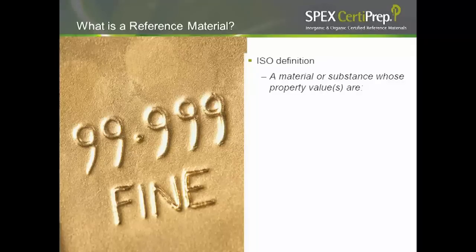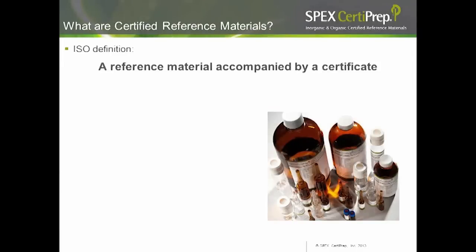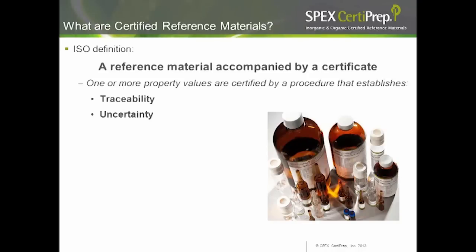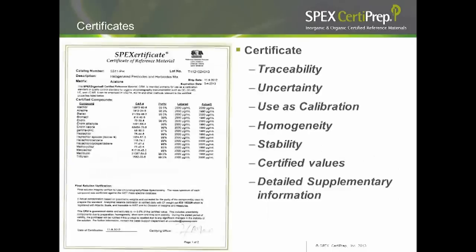A reference material is a material or substance whose property values are sufficiently homogeneous and well established, used for calibration of an apparatus, assessment of a measurement method, or to assign values to materials. A certified reference material is a reference material accompanied by a certificate. This certificate must contain certain necessary information according to ISO guidelines, including property values such as traceability and uncertainty, as well as supplementary information including certified bodies, methods of measurement, how the material is prepared, and statistical treatment of results. Our certificates include uncertainty, traceability, how to use the standard for calibration, storage information, and intended use.